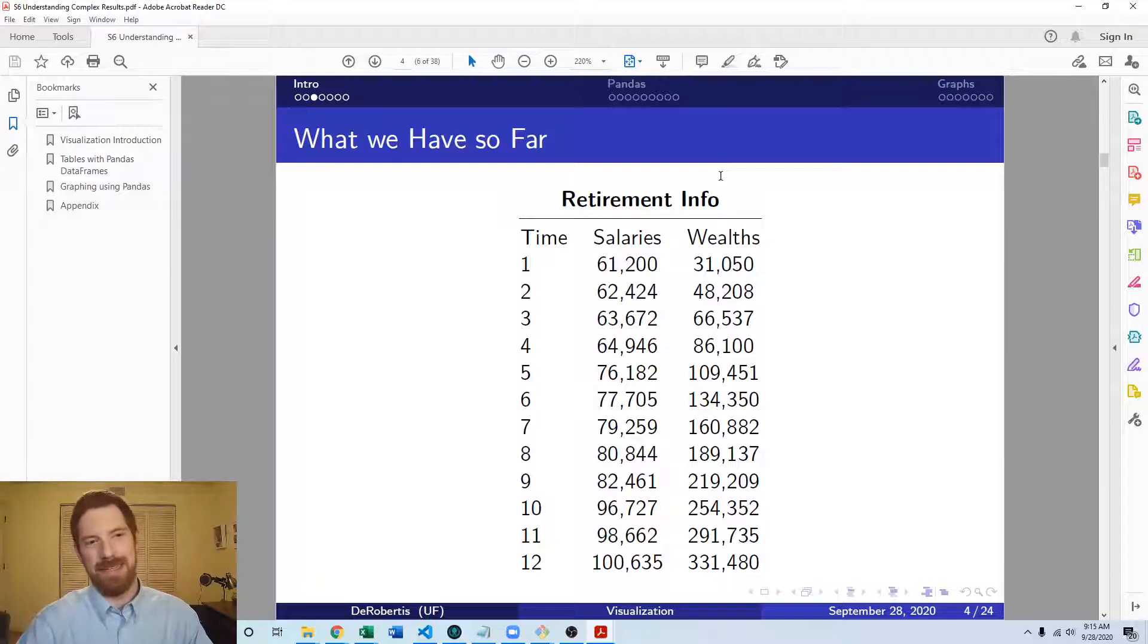The salaries and wealth together, they're aligned by time, so that already helps substantially in understanding what's going on. We had this in Excel basically because you're always working in tables in Excel, but we didn't even get to a table format in Python yet.